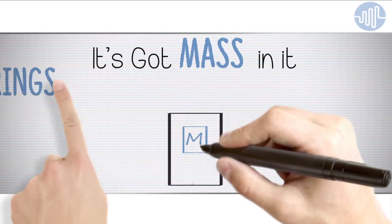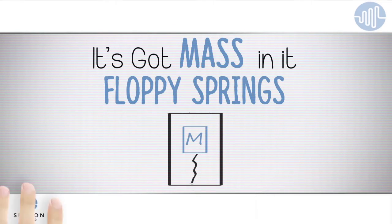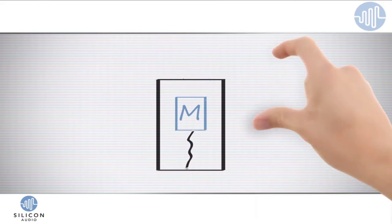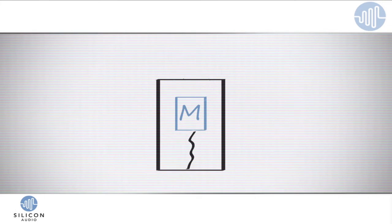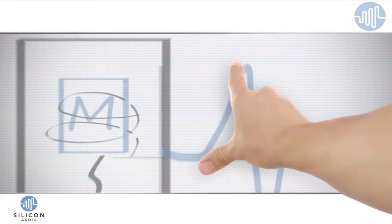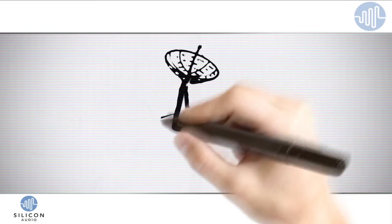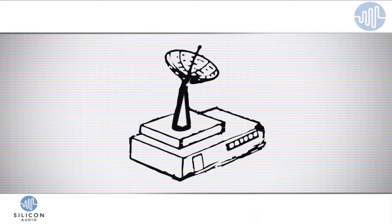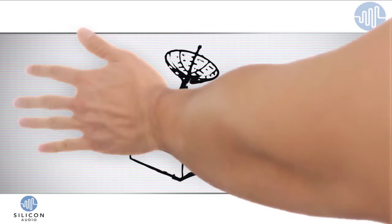You see, the traditional geophone works like this. It's got mass in it, and it's got floppy springs. When there's movement, the mass suspended on these springs moves. And these coils respond to that movement, inducing electric voltage to come out as usable signals. These signals are then sent to a ground station where scientists can do a bunch of fancy processing with this data, which tells them information about what's happening underground.